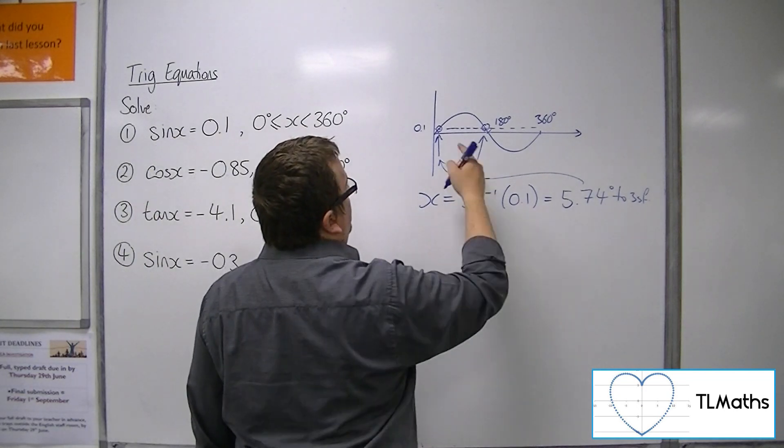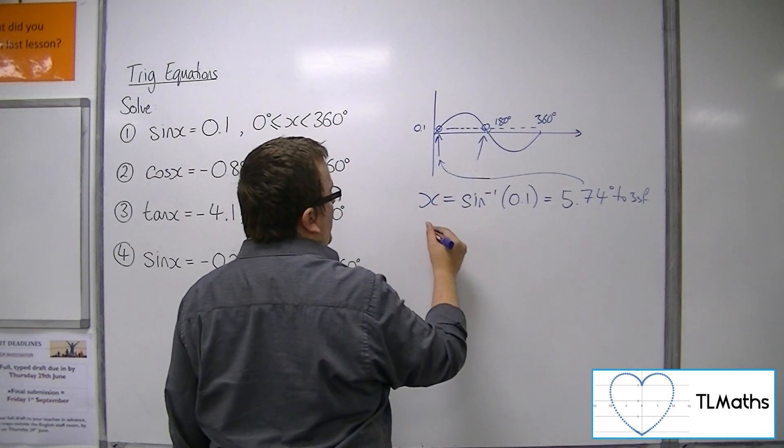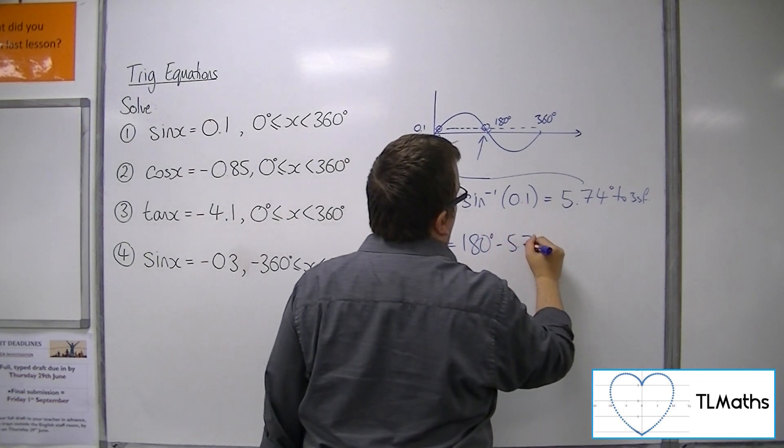And then the second one, because that's 5.74, that must be 5.74 away from 180. So 180 take away the 5.74.